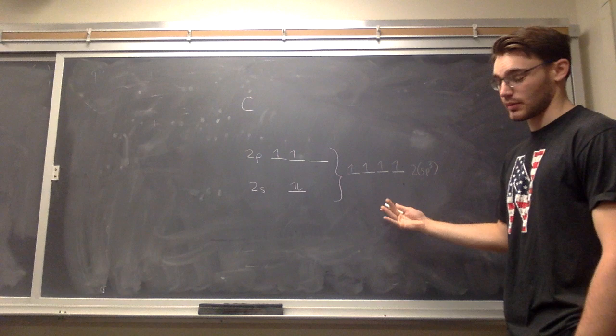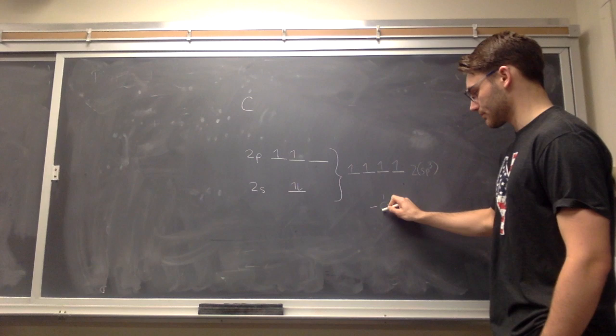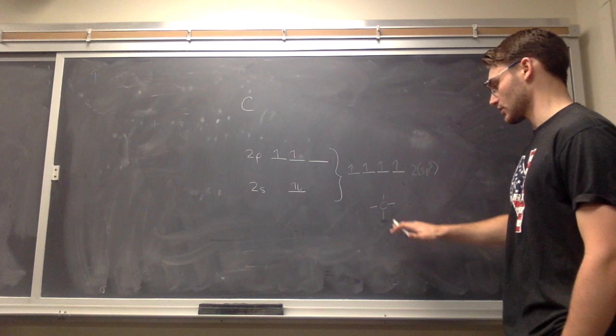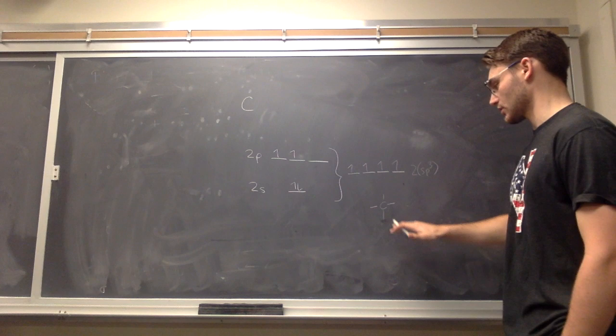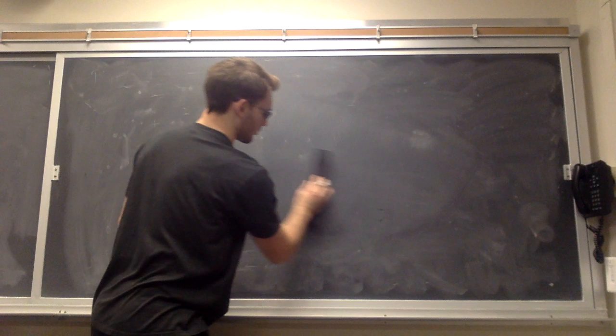So, here we can see that we have four unpaired electrons. And we also know that carbon makes four bonds. So, we know that that's the preferred valence of carbon and it likes to form four bonds. So, we'll just keep that in mind as we roll through other elements in this row.